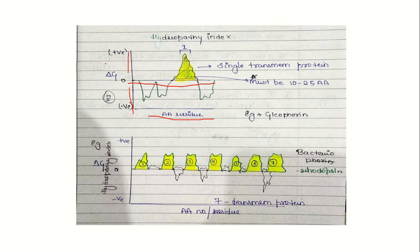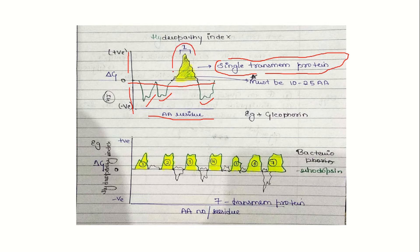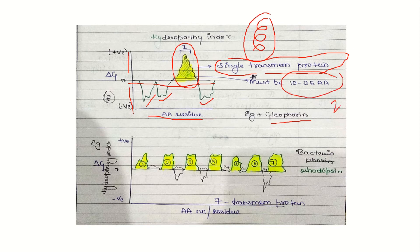If we see one peak where delta G is positive, that indicates a single transmembrane protein. For bacteriorhodopsin, we get seven peaks above the threshold, meaning it is a 7-times membrane-spanning protein. We also give a comparison graph for a single-pass glycoprotein. Each peak must span at least 20 to 25 amino acids to count as a transmembrane segment.